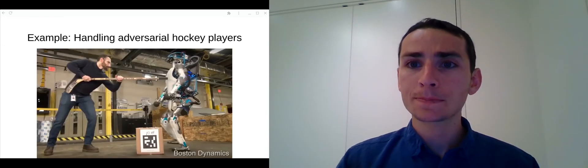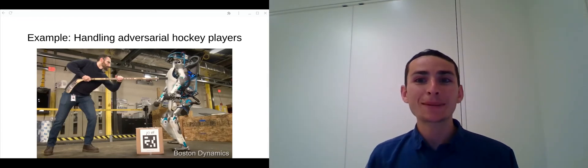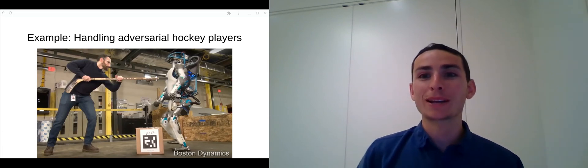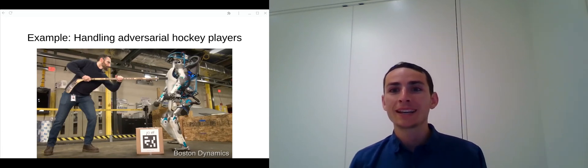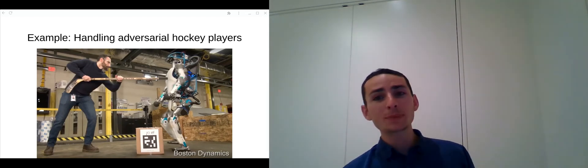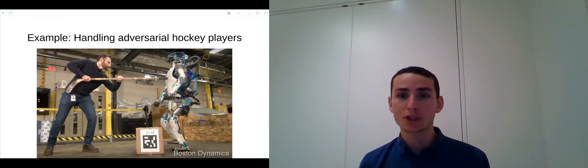As another example, here's an adversarial hockey player that attempts to knock over a robot. If the robot always tries to deflect the hockey player using the same strategy, it'd be pretty easy for the human to knock over the robot. By injecting noise into the robot's decisions, the robot can be more robust against these disturbances.